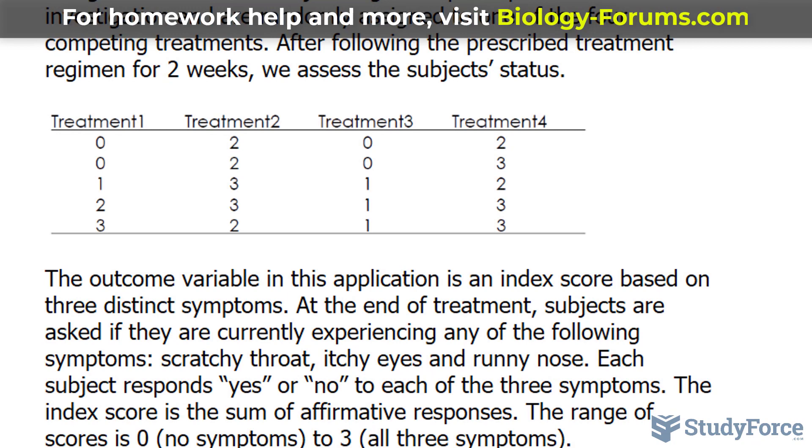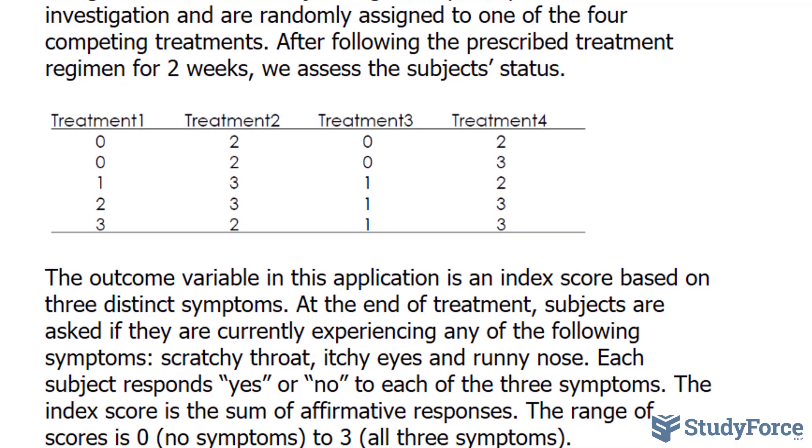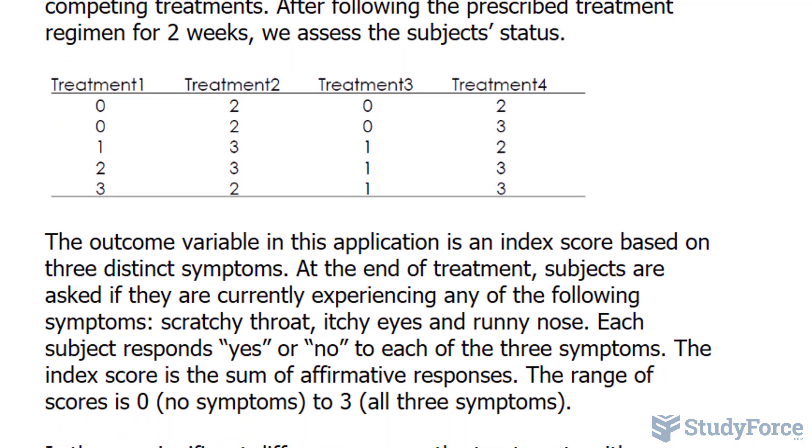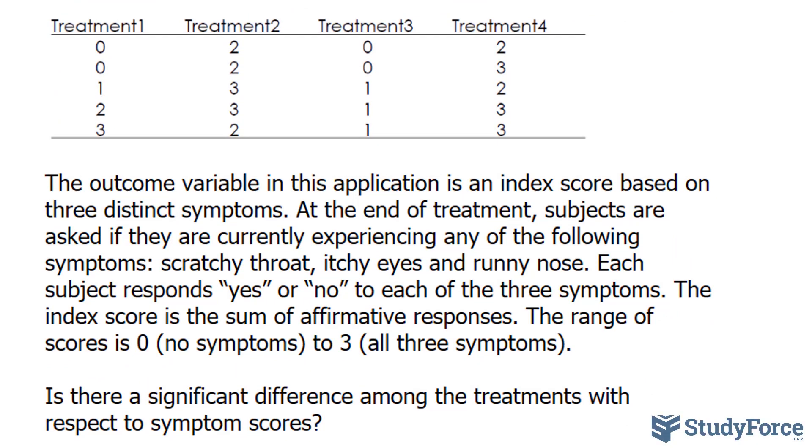The outcome variable in this application is an index score based on three distinct symptoms. At the end of the treatment, subjects are asked if they are currently experiencing any of the following symptoms: scratchy throat, itchy eyes, and runny nose.